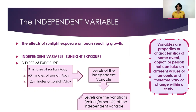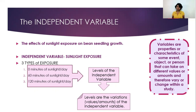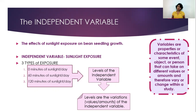Levels are the variation, the changes, the difference in amounts of the independent variable. This goes back to our basic definition of a variable — that variables take on different values that change. The variable of sunlight exposure can vary and change in three ways, and that is the amount of minutes of sunlight the beans get. So that is our levels.